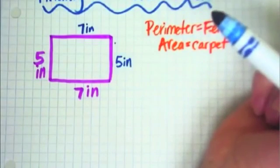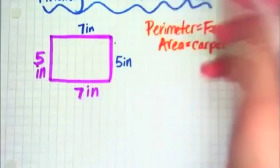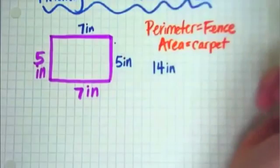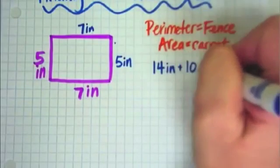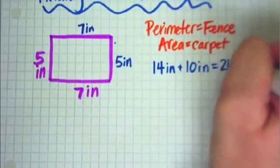Now you guys are really good at doubling, so we're going to take a shortcut. The double of 7, we know, is 14 inches. The double of 5, we know, is 10 inches. So if we were to add 14 plus 10, we would get 24 inches.